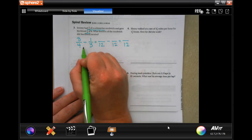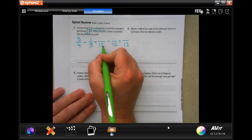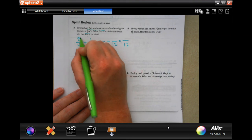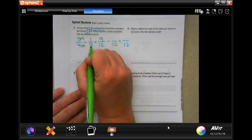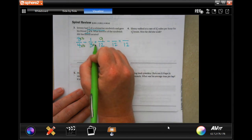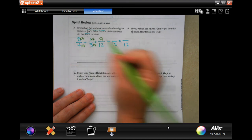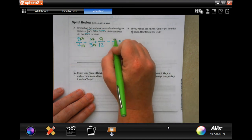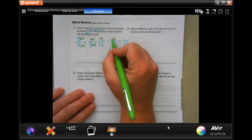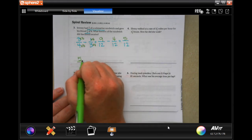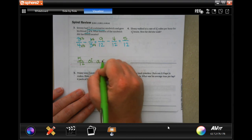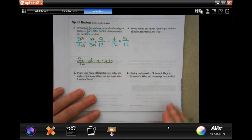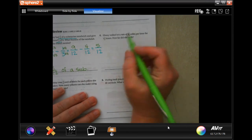So now, 4 times what is 12? Well, 4 times 3. So now, whatever you do to the bottom, you have to do to the top. 3 times 3 is 9. Now we multiplied the 3 by 4, which means we need to multiply the top by 4. 1 times 4, 4. Now 9 minus 4 by 12. We've got 5 12ths of a sub. There you go.